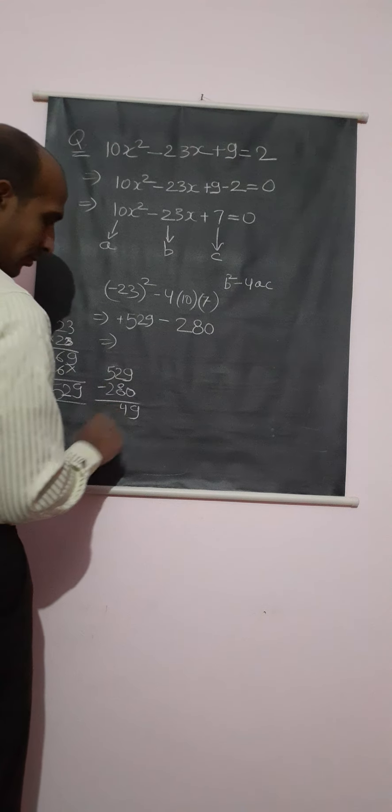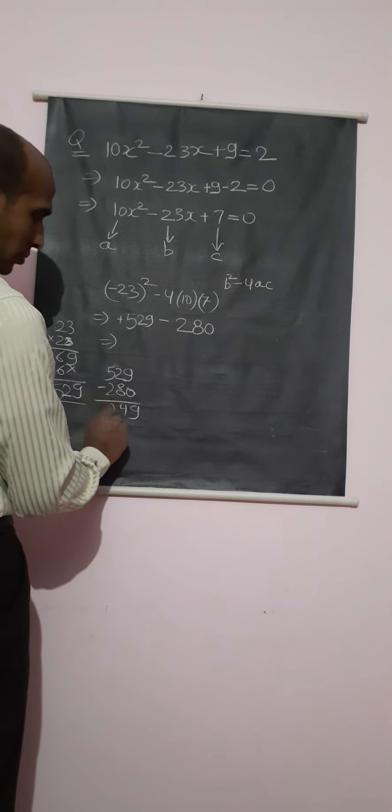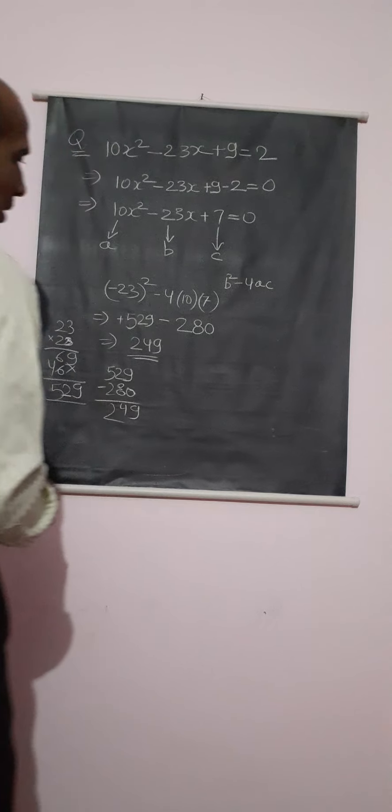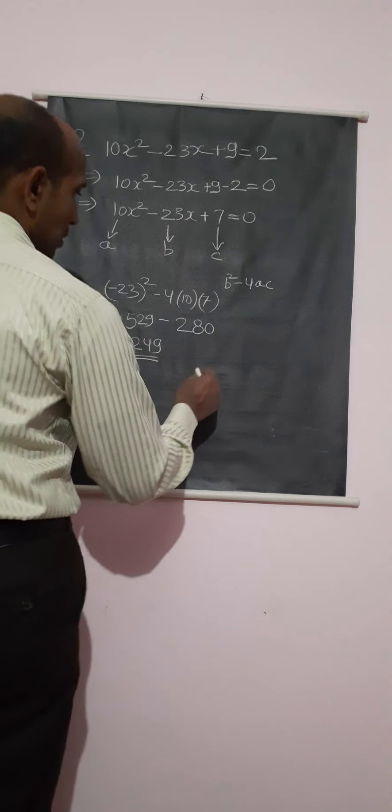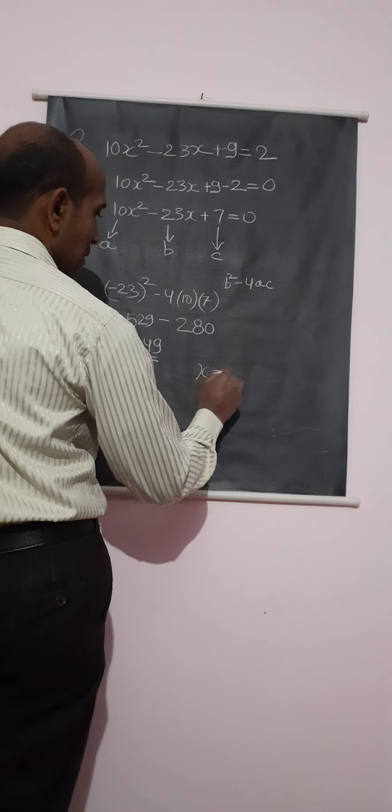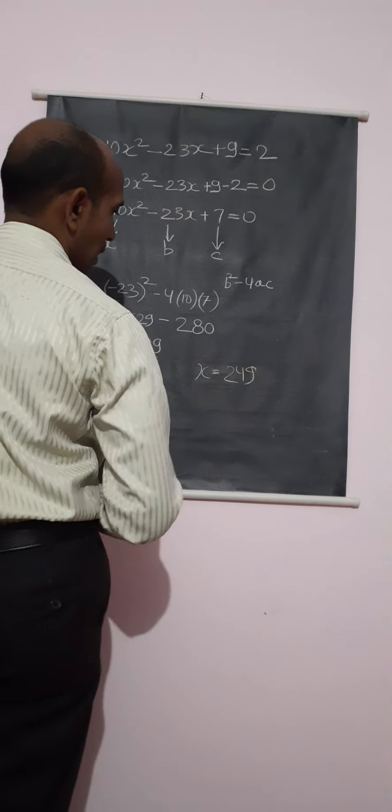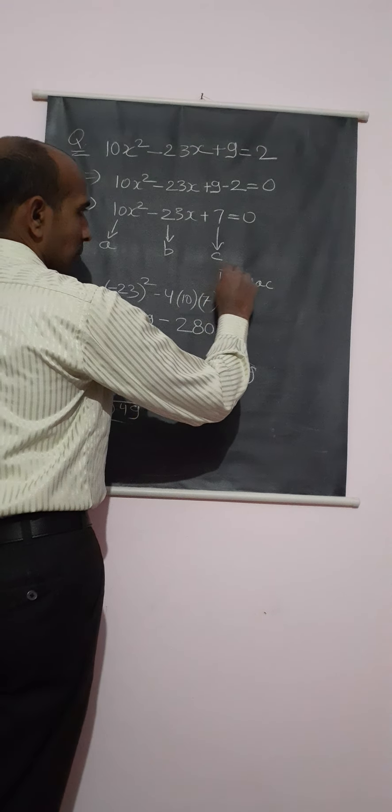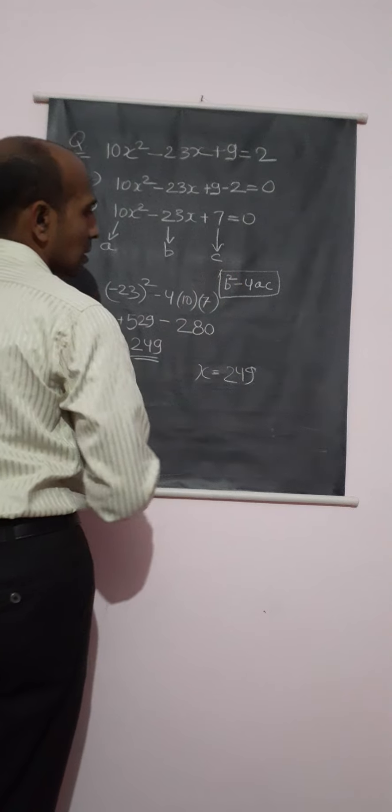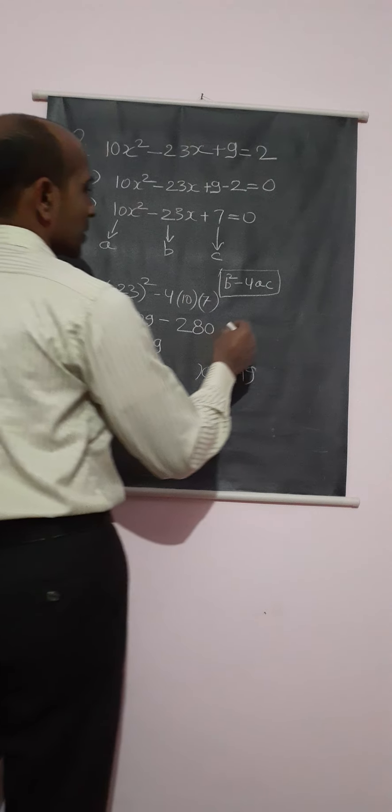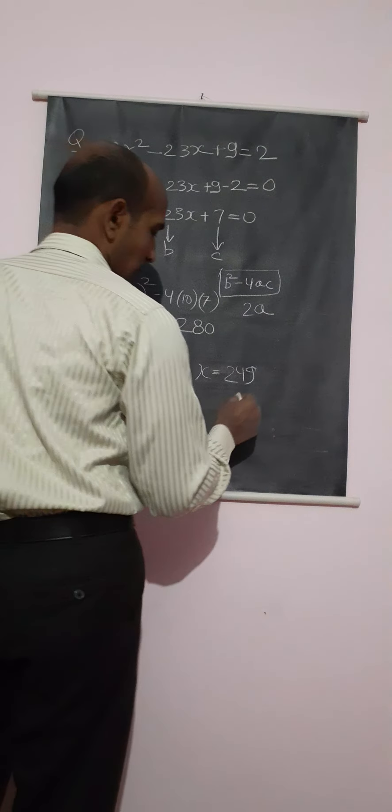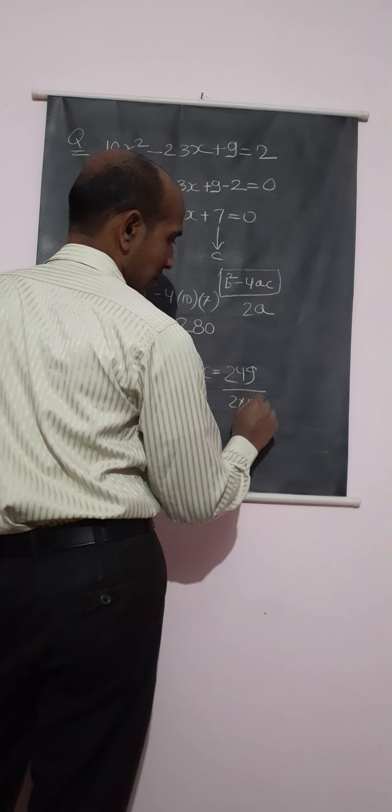When we subtract these terms, we will get 529 minus 280. So the value will be 249. We can solve this type of question by this method: b² - 4ac upon 2a. 2a means 249 upon 2 × 10.